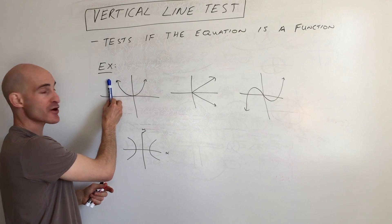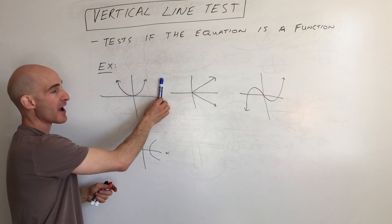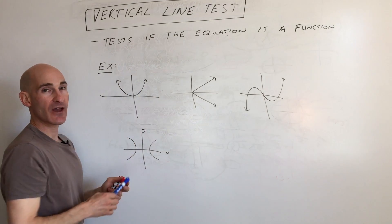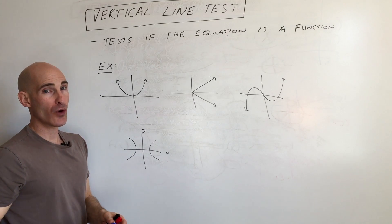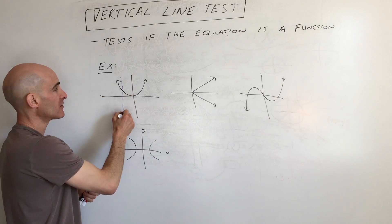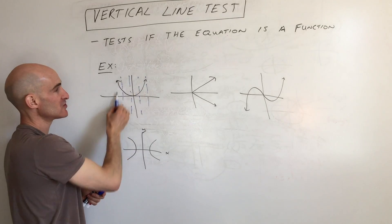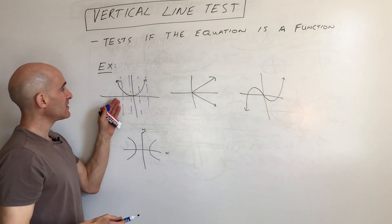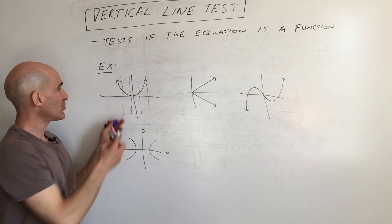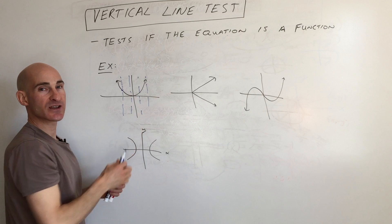Take a vertical line and scan from left to right across the graph. You look to see if the line crosses the graph at more than one point. So I'm scanning across using vertical lines — does it ever cross the graph more than once? No, it looks like it's only crossing once here, once here, once here, once here.